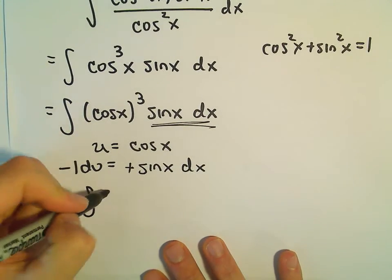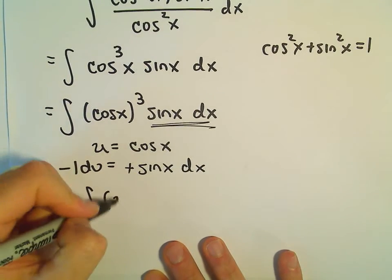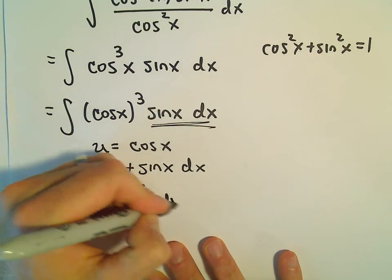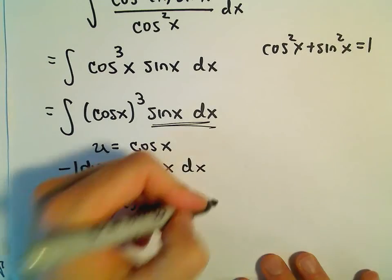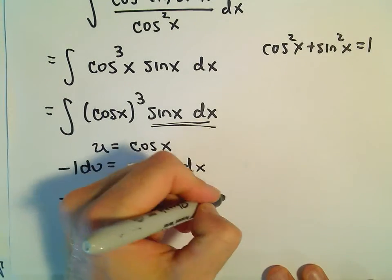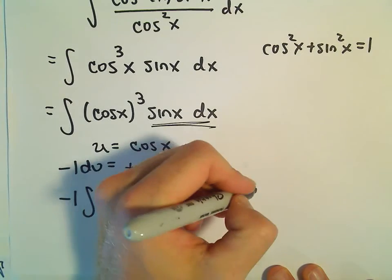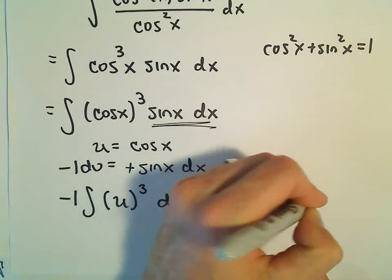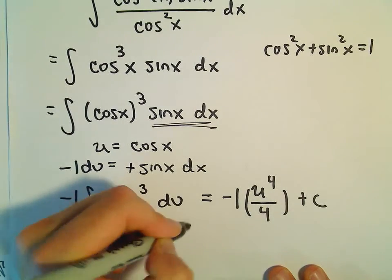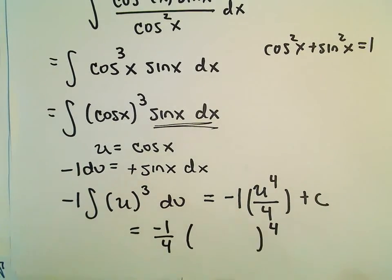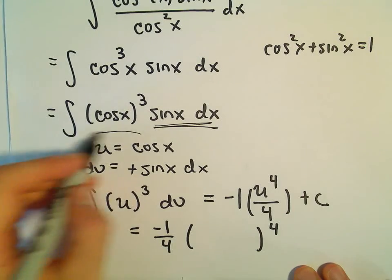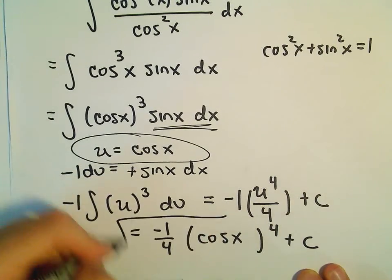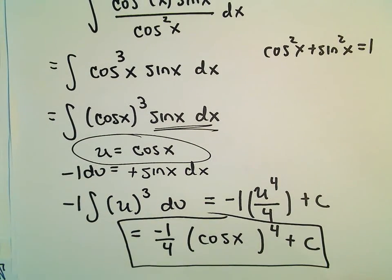So now if we substitute, we'll have u to the third power, and sine x dx is negative 1 du. This is about as easy as integration comes — u to the third gives us u to the fourth over 4 plus C. So that'll give us negative one-fourth times cosine x to the fourth power, plus C. And we've now got our solution.